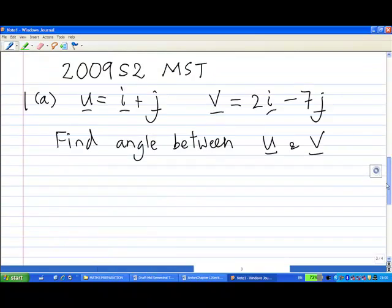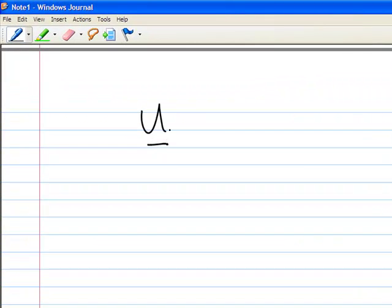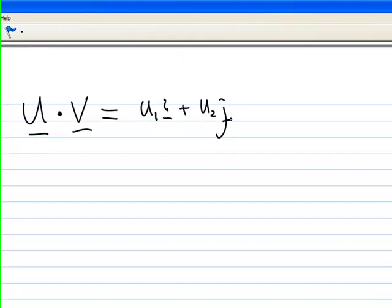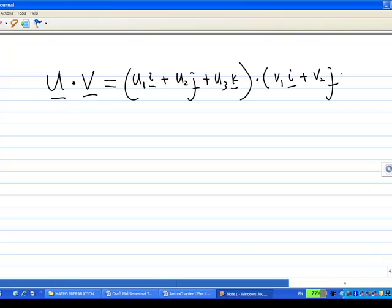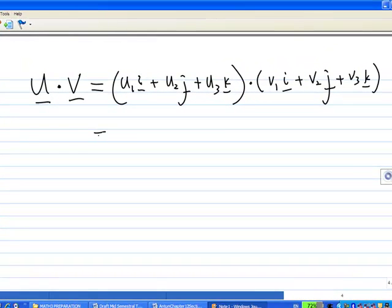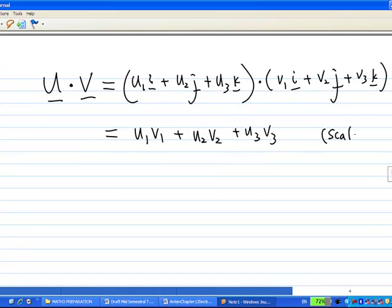What is the takeaway for this question here? So, first of all, takeaway is how to find u dot v. Algebraically, if u is u1i plus u2j plus u3k, and say v is v1i plus v2j plus v3k, then u dot v will be just u1 times v1 plus u2 times v2 plus u3 times v3, and this is a scalar, not a vector in this case.